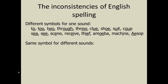We also have the same symbol for different sounds. So we have the letter A, but it has different sounds: dame, dad, father, hall, sofa, many. They are all the same letter, but they are all different sounds.